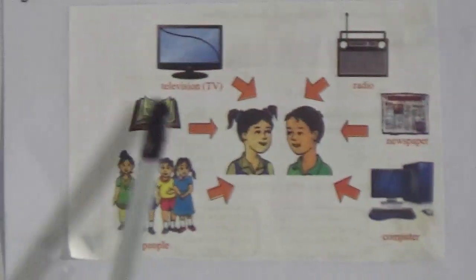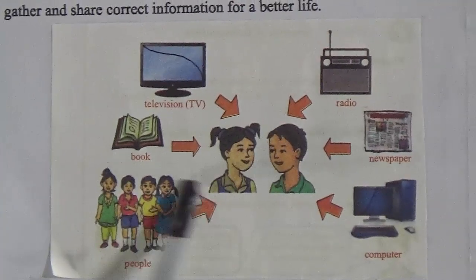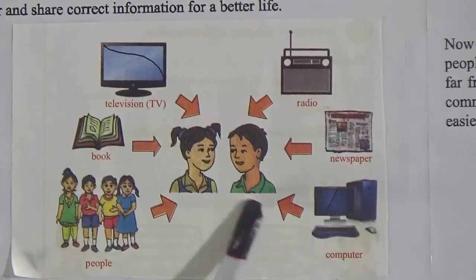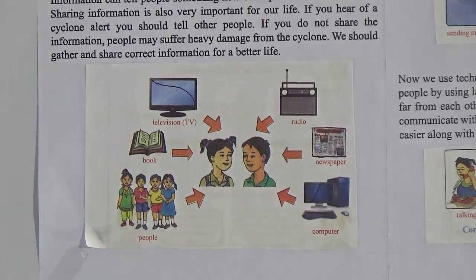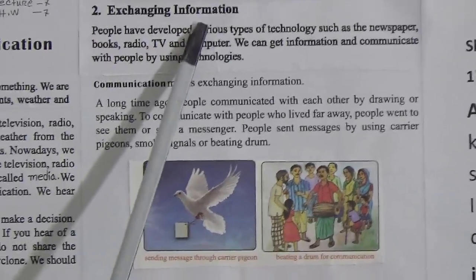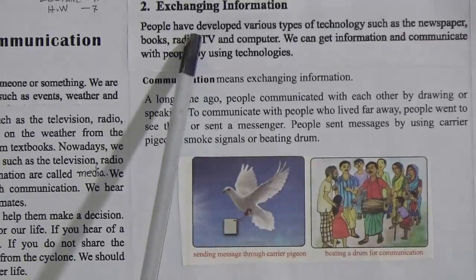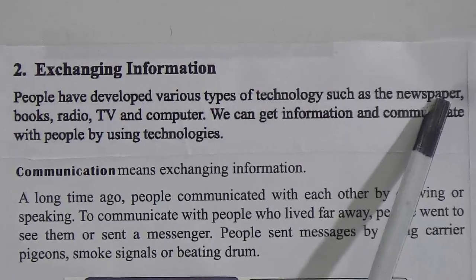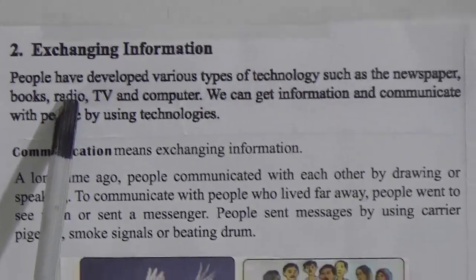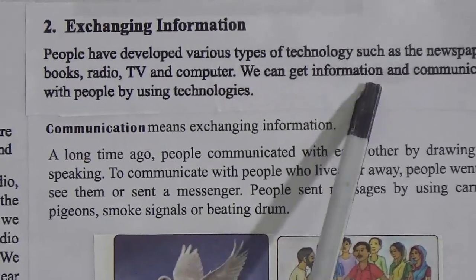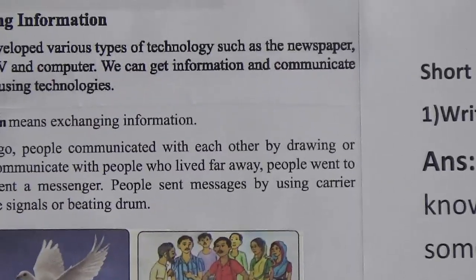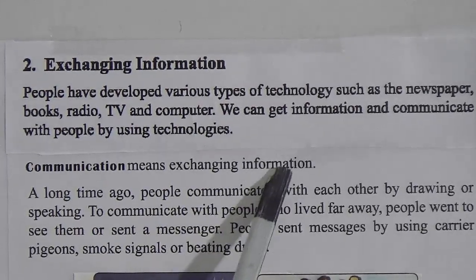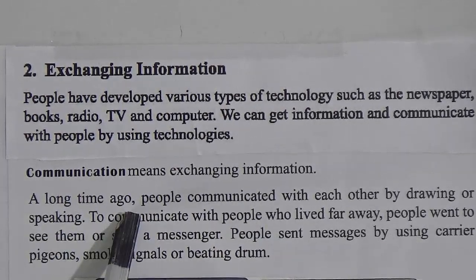If you can see this picture, you can get information from people, books, television, radio, newspaper, and computer. People have developed various types of technology to exchange information. We can get information and communicate with people by using technologies. Communication means exchanging information.